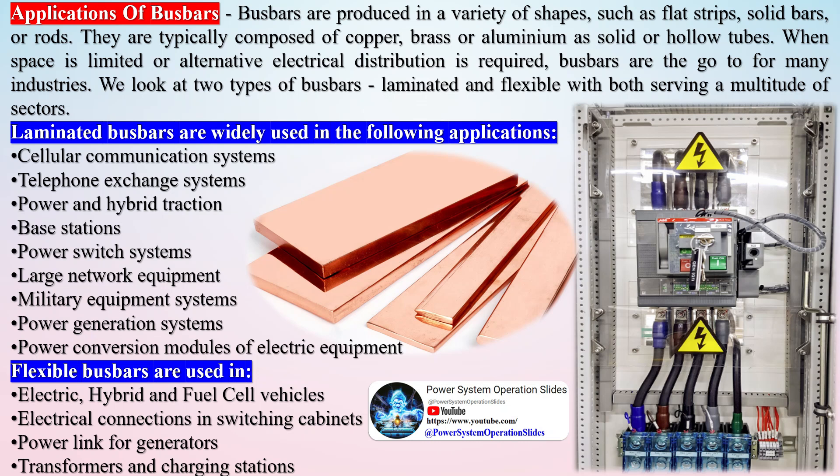Different coating or plating materials provide varying levels of conductivity and duration of the product's lifecycle. Busbars are typically made from corrosion-resistant copper, brass, or aluminium in solid or hollow tubes. They are produced in a range of shapes including flat strips, solid bars, and rods. Some of these shapes allow for more efficient heat dissipation due to a high surface area to cross-sectional area ratio.